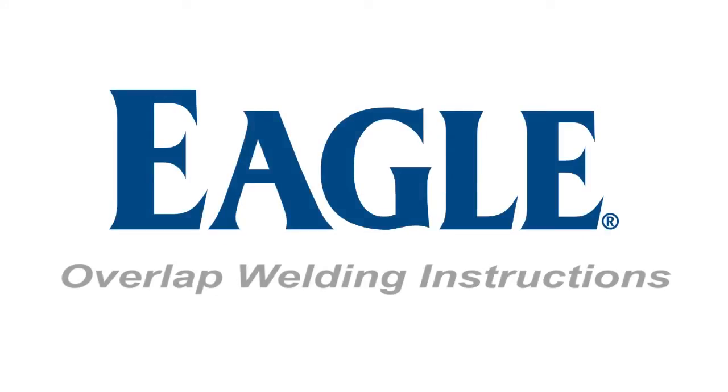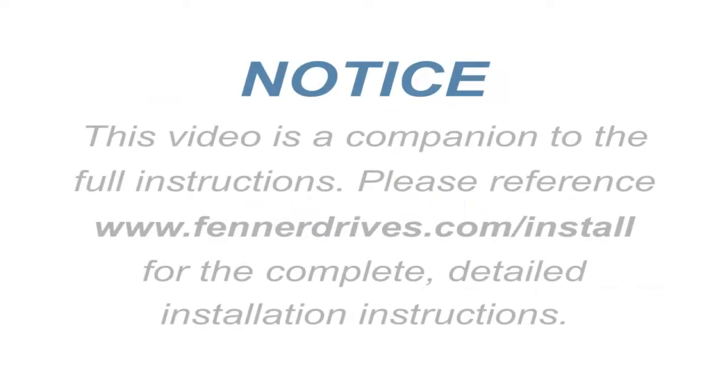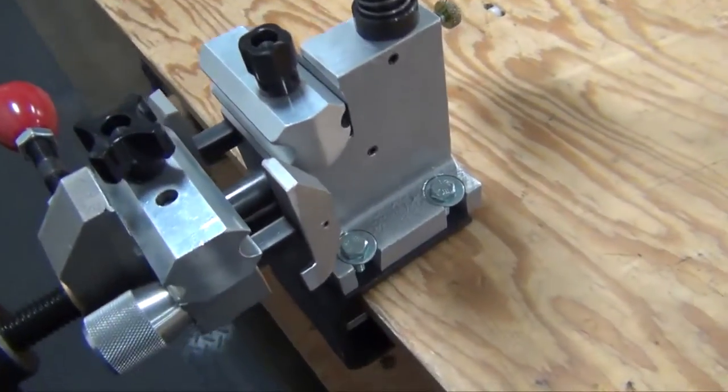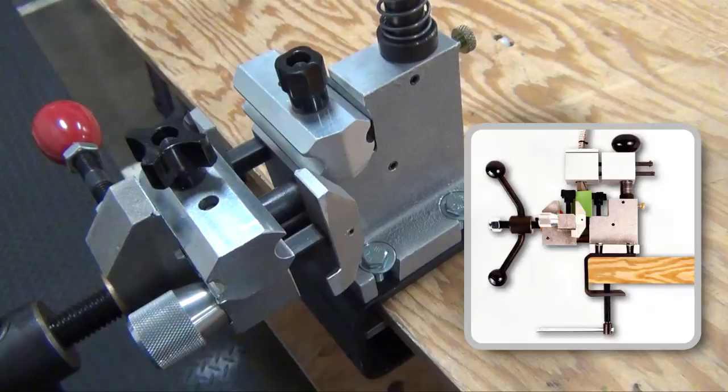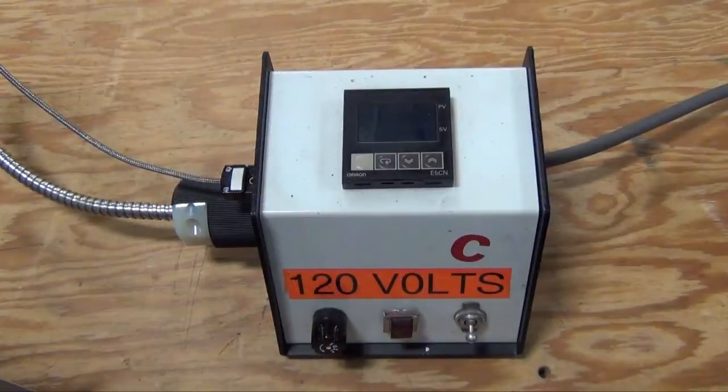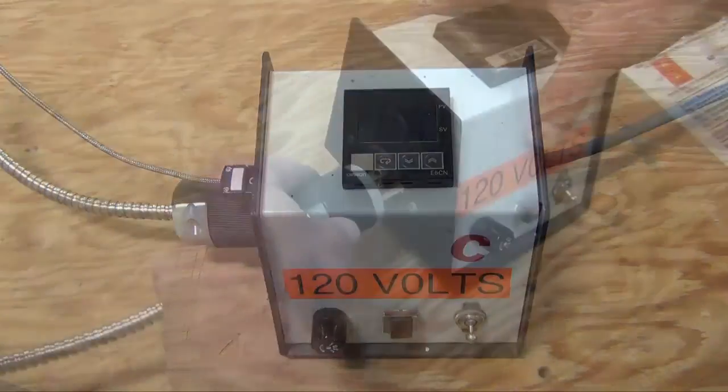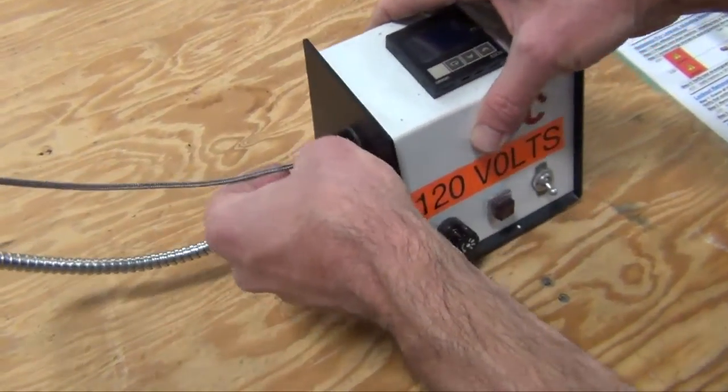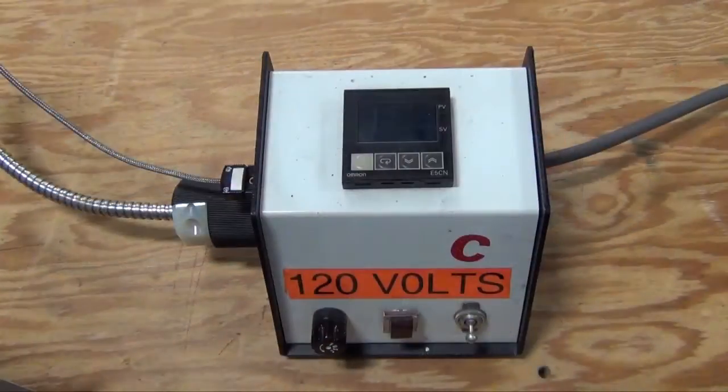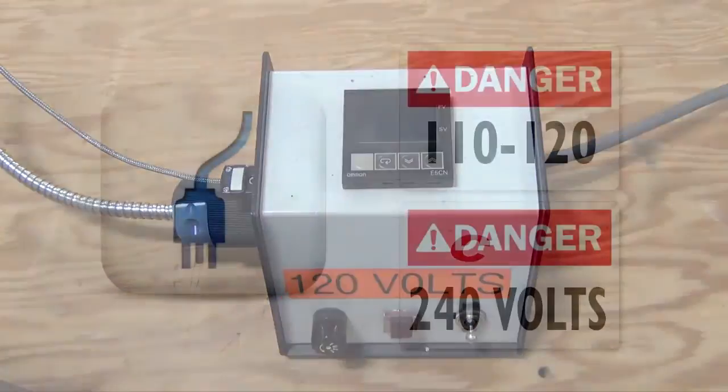Eagle Overlap Welding Instructions - How to weld: Securely fasten welder to mounting surface. On the front of the control box is an on-off switch, indicator light, and fuse holder. Plug power supply line and thermocouple from welder into left side of control box. On the right side of the control box is the main power cord.